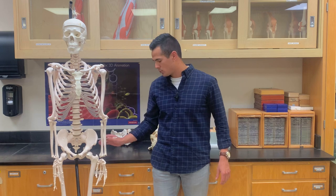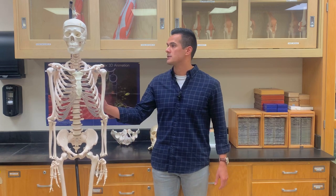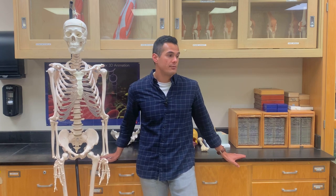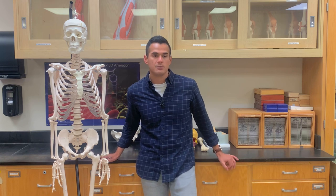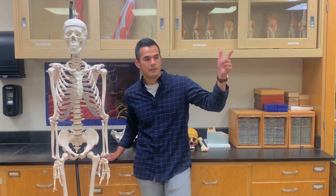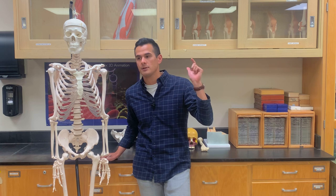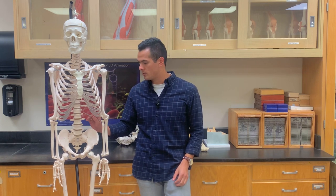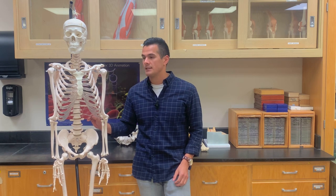That's pretty much all the bones in our skeleton. The next thing I want to talk about is the cartilages. There are three types: elastic, hyaline, and fibrocartilage. These cartilages are found in different regions. What's in between the vertebrae is what's known as the intervertebral disc, and those are composed of fibrocartilage.